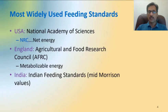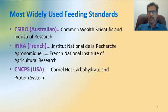India mainly uses the Morrison value for the establishment of nutrient requirements for their own animals. In Australia, CSIRO — the Commonwealth Scientific and Industrial Research Organisation — establishes feeding standards on a metabolizable or net energy basis. Similarly, INRA in France has their own feeding standards.